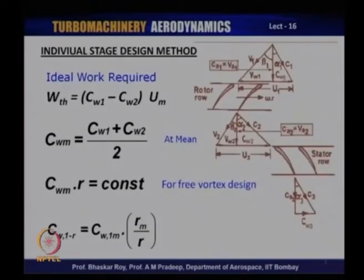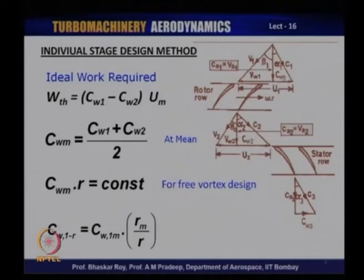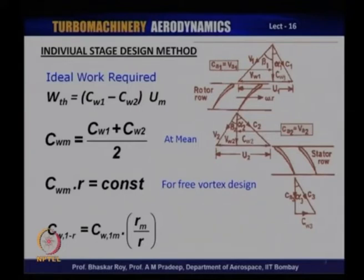Now let us see where we need to start. We need to start with the fact that you are designing an individual stage that needs to do a certain amount of work. This work is supplied by the turbine. The theoretical work W is equal to (C_W1 minus C_W2) times U at the mean. This gives you the ideal or minimum amount of work that has to be put in to effect that change in whirl component, if the blade is operating at blade velocity U at that particular section.